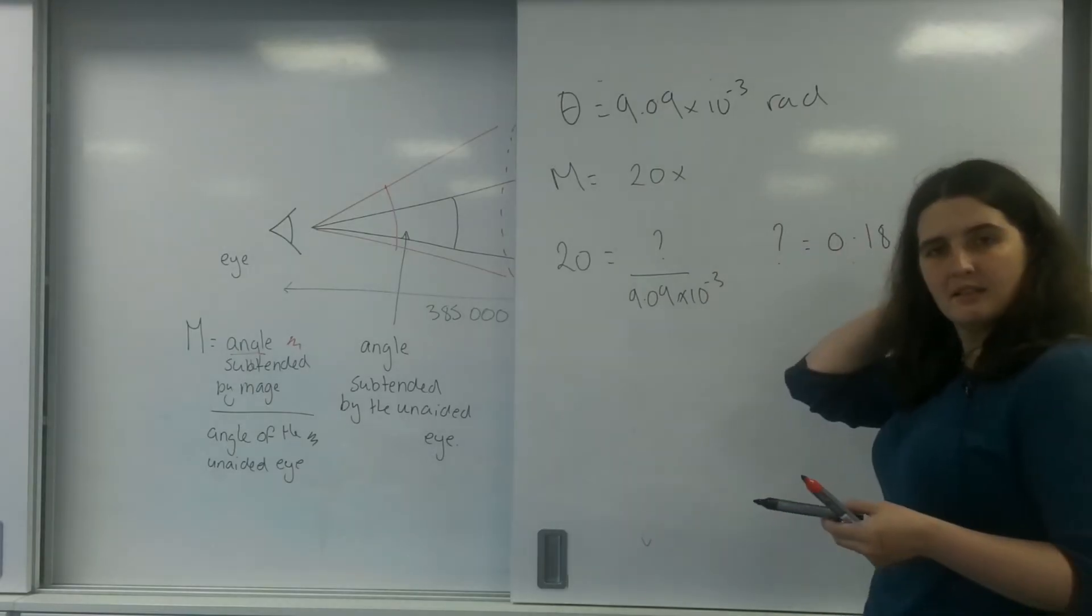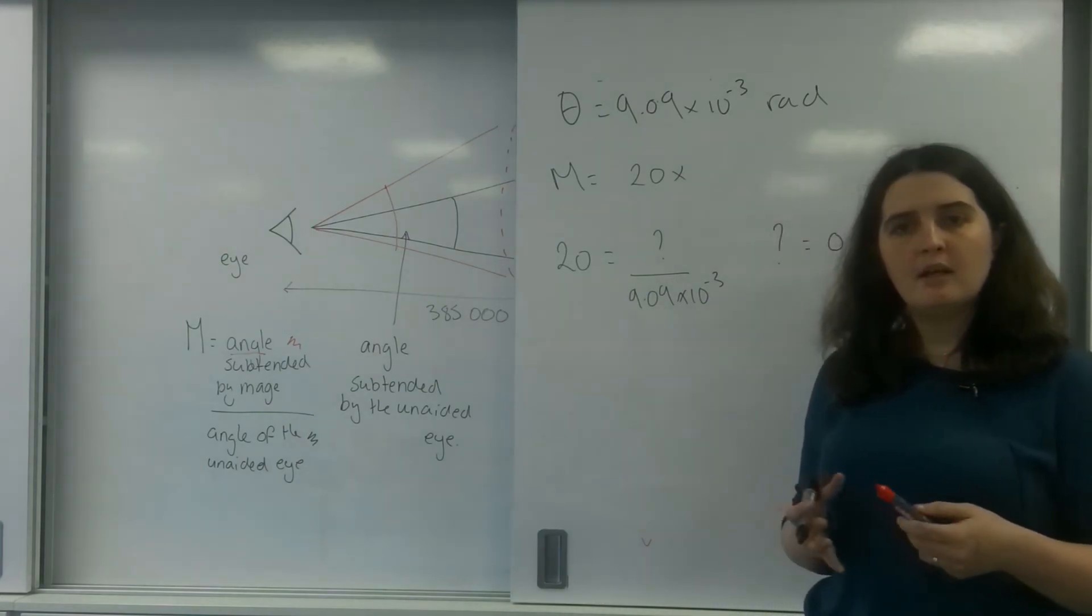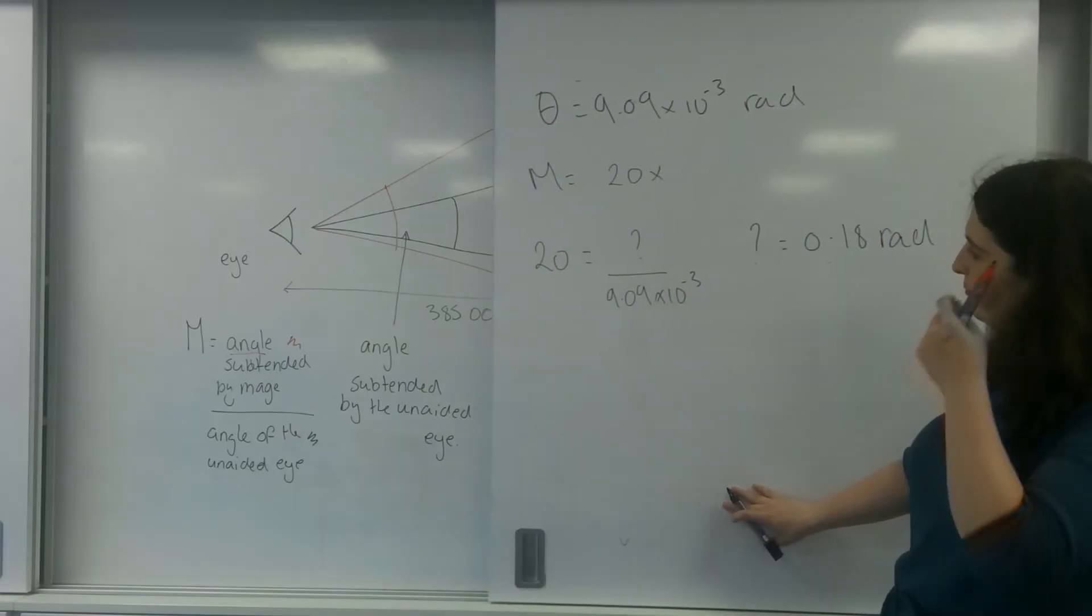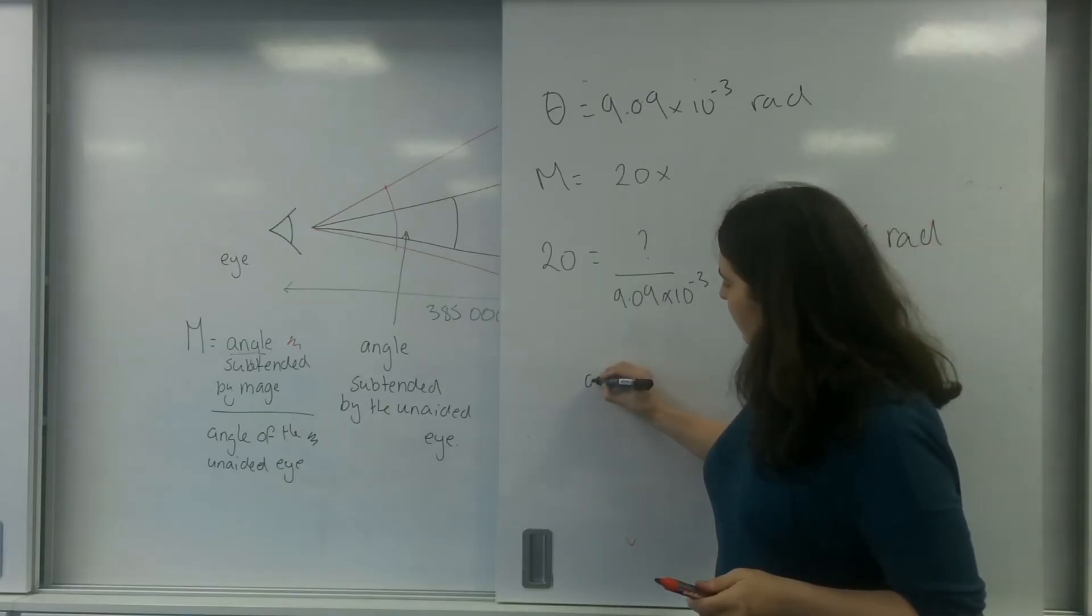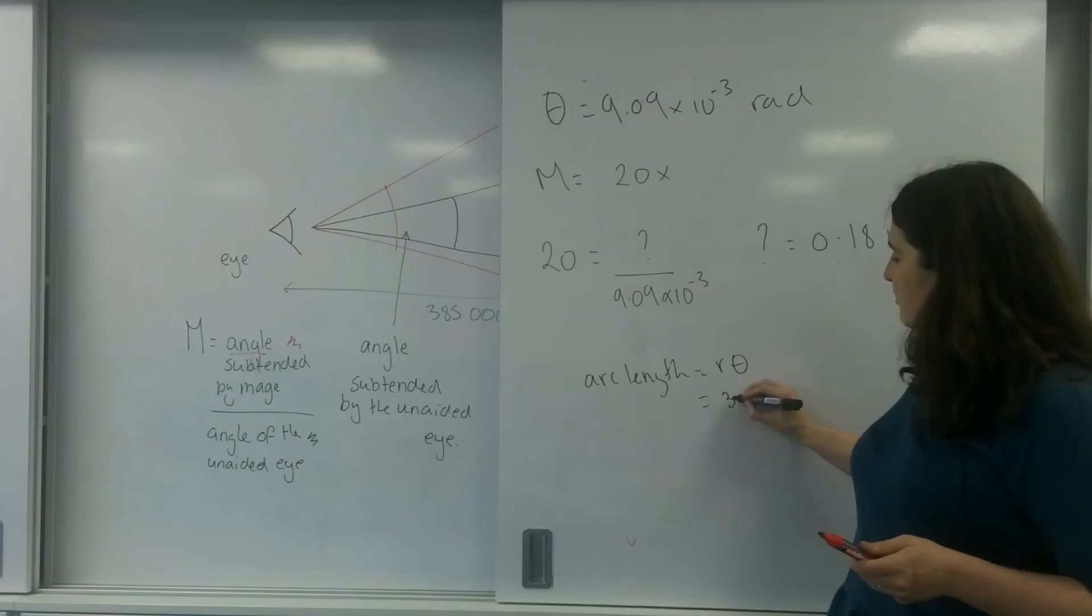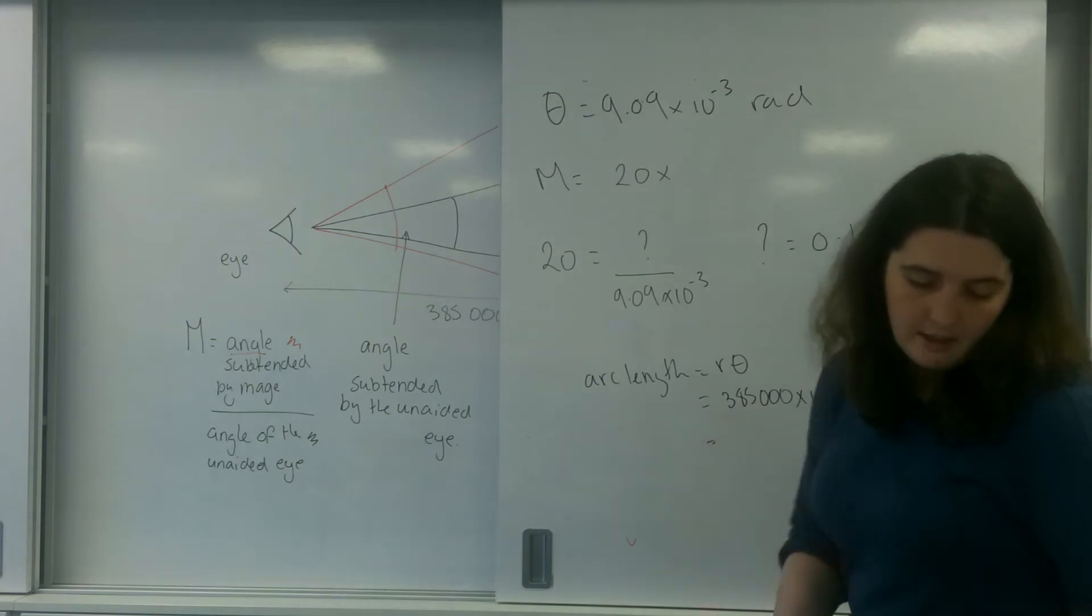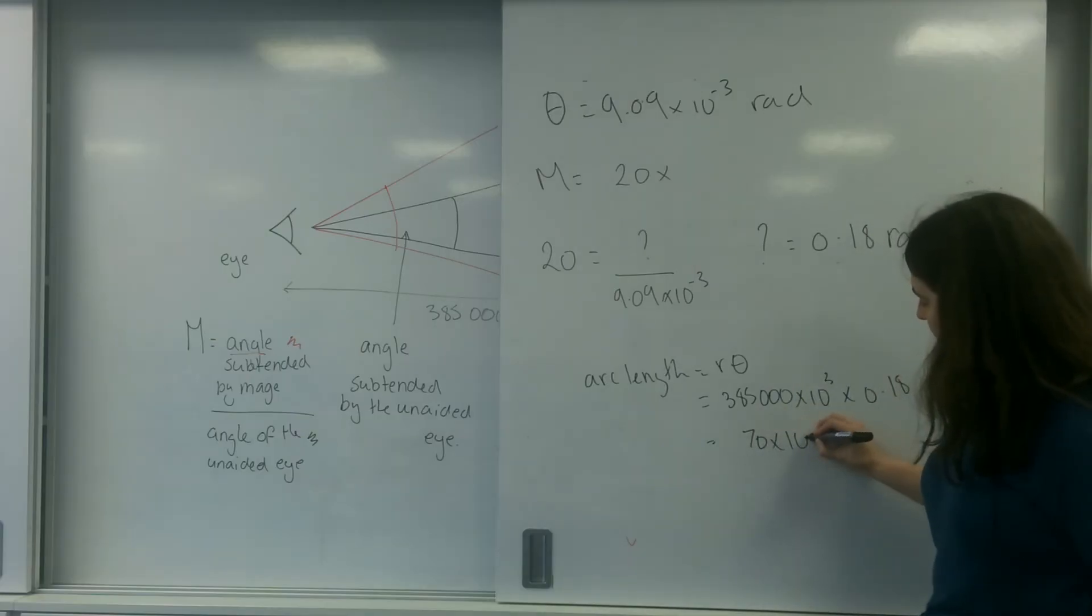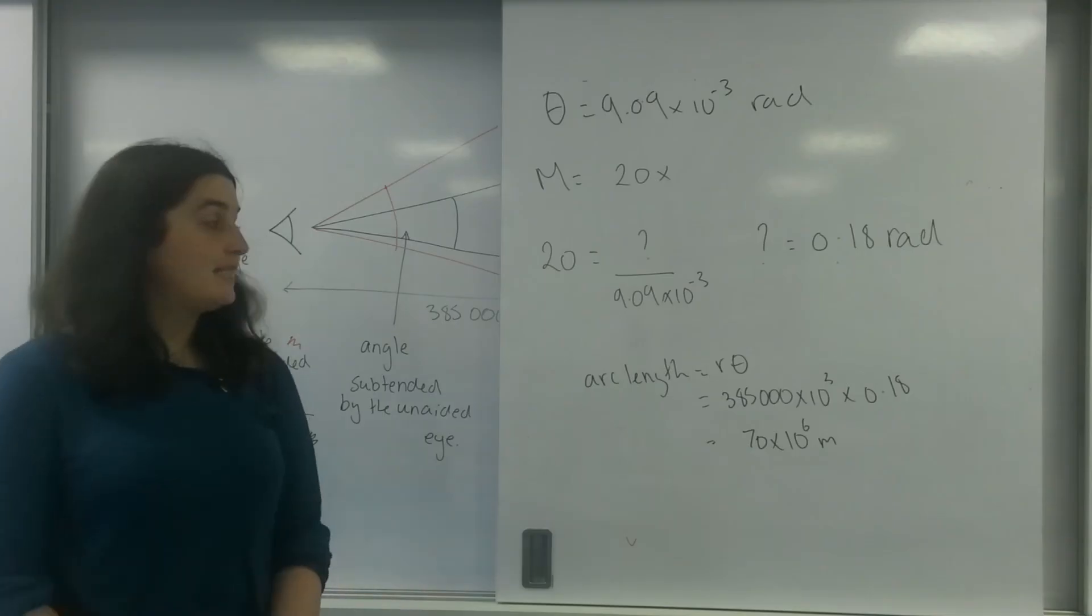And so if my distance was further away, so my distance is the same, let's see how much the moon would look. So we're going to keep the distance from me and the moon, but the moon is going to get bigger. So I know that arc length equals r theta. r is 38,500 times 10 to the 3 times by 0.18. So my moon is going to look like it has a diameter of 70 times 10 to the 6 meters.